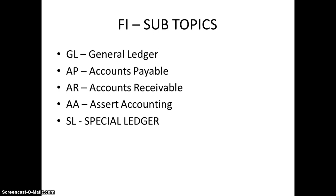Asset Accounting handles all the assets of a company. We need to calculate all the depreciations of various products that we normally have. For example, a software company has a lot of laptops or desktops for which the asset value will be reduced going forward next year. So we have to calculate the depreciation and maintain that in asset accounting. And we have something called Special Ledger which deals with different types of transactions, which we are going to discuss in the coming classes.